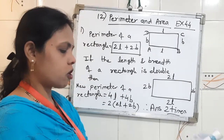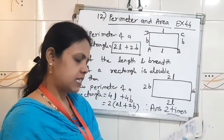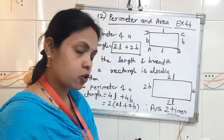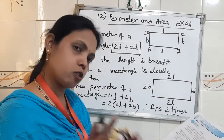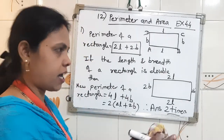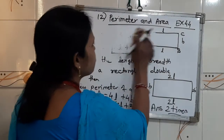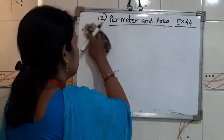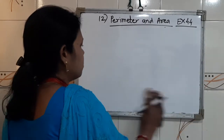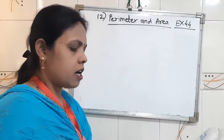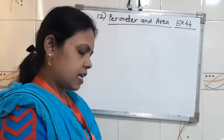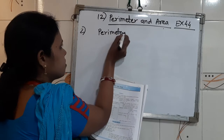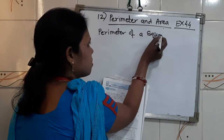Now we are going to move to our second question. If the side of a square is tripled — children, listen properly. In the first question, a rectangle was given, but in the second question, a square is given. We know about the square, so let me work on this one. In question number 2, the perimeter of a square is what we will find first.